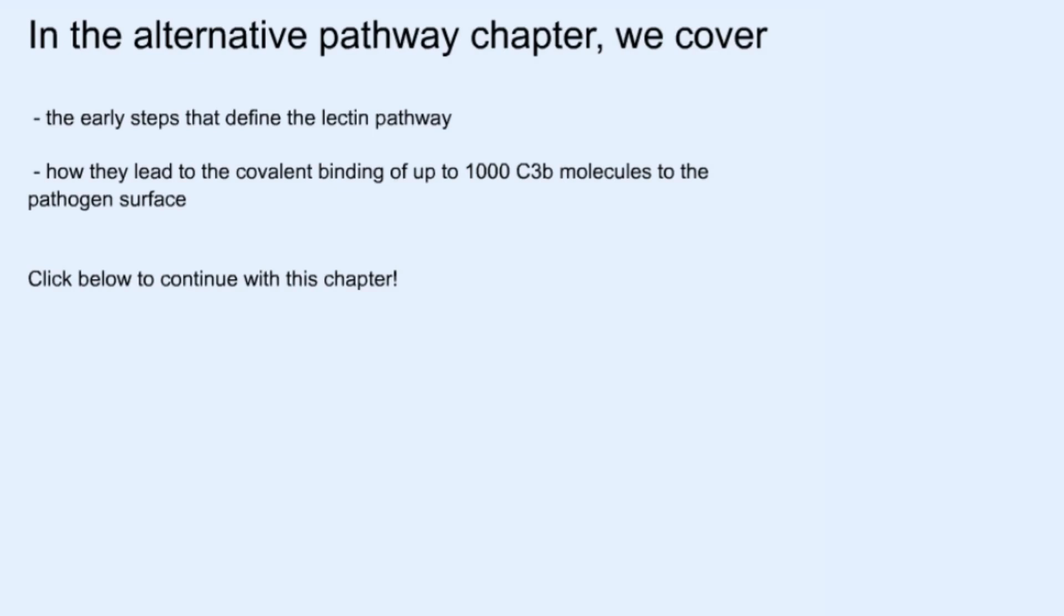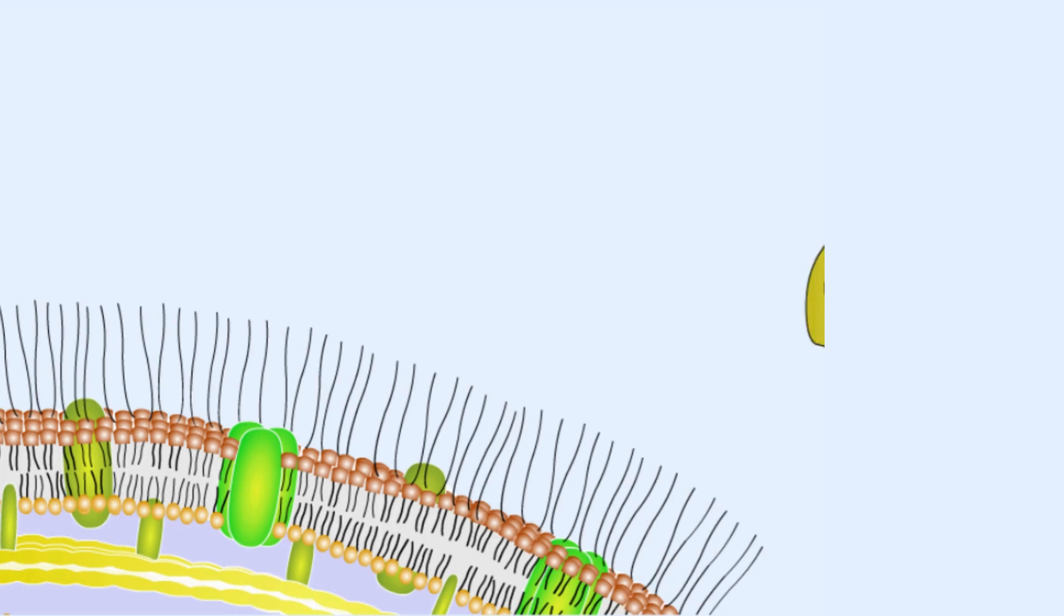Let's look at the alternative pathway of complement activation. Let's begin. This pathway deals with the automatic lysis of C3 complement protein into C3A and C3B.